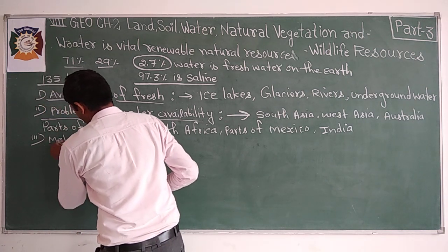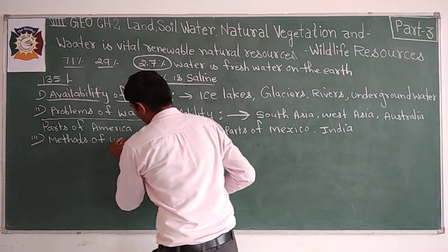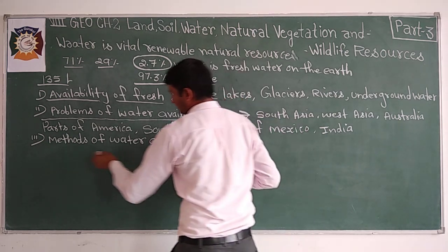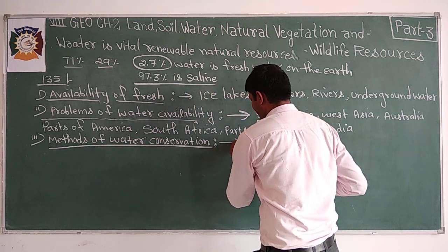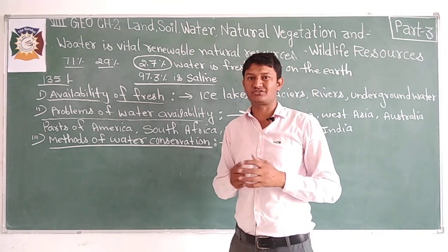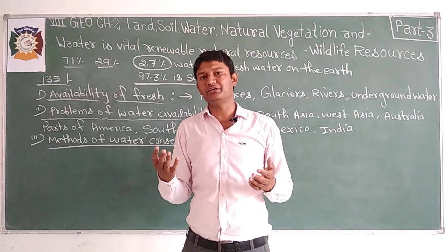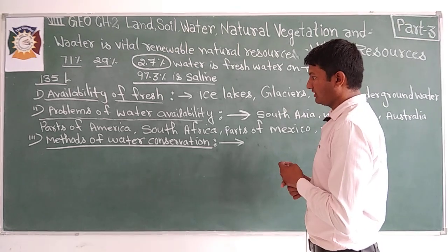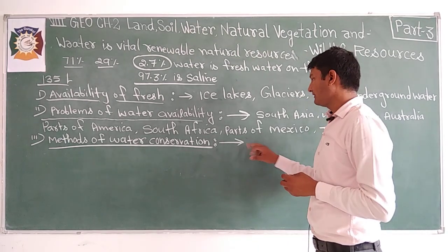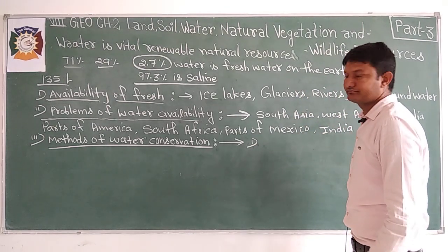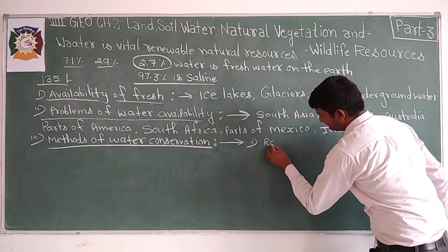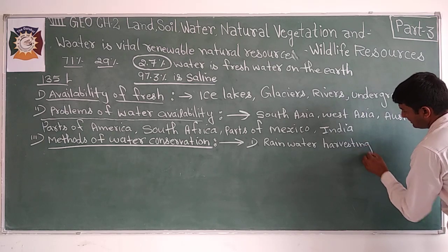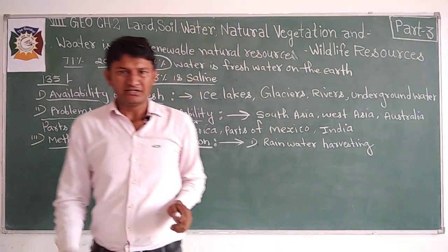Now we will discuss methods of water conservation. It is very important for us to conserve water; otherwise this precious resource will be exhausted. Water cannot be added or subtracted from the Earth — it remains constant. One very important and essential method is rainwater harvesting. This technique is not new; it is very old.